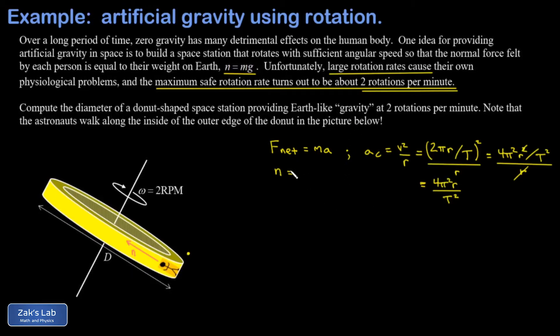If we go back to Newton's second law, the net force on the astronaut is just the normal force. It's the only force acting. That's going to be equal to the mass times the acceleration, which we can then write as 4π²r over T².